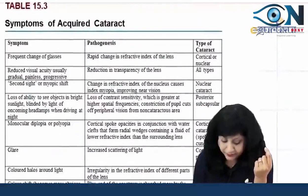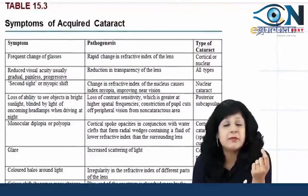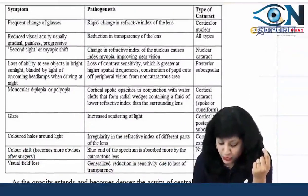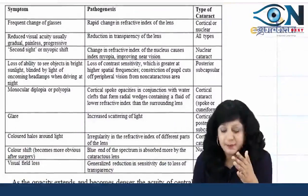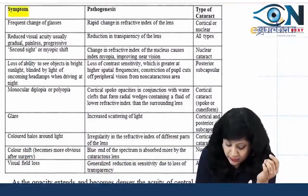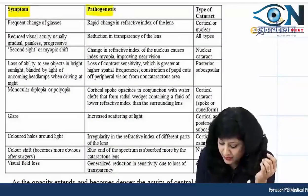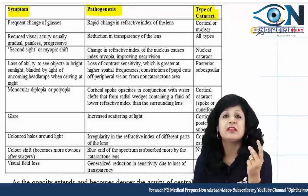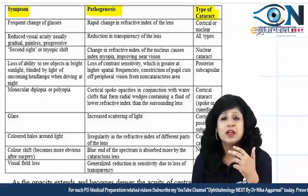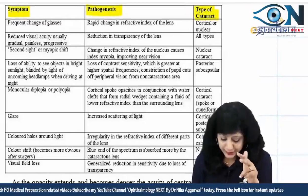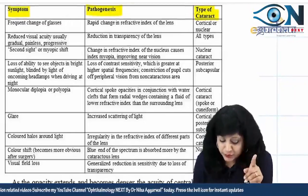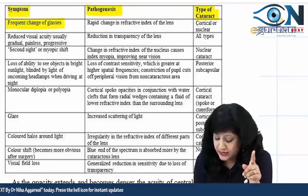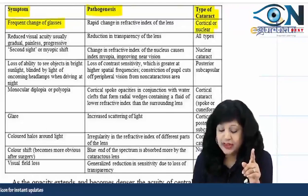Now see this important table of symptoms of acquired cataract — the symptom, pathogenesis, and type of cataract. This flow chart will help you solve many questions directly. First is your frequent change of glasses, which occurs in cases of cortical or nuclear cataract, because frequent change of glasses is related to the change in refractive index.